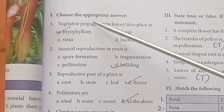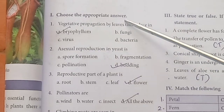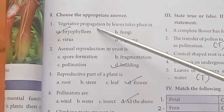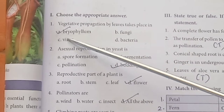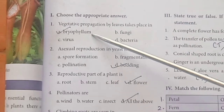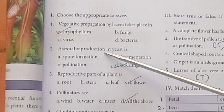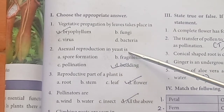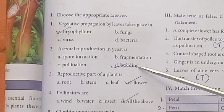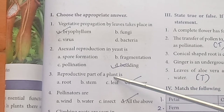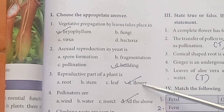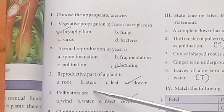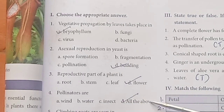Exercise — Choose the appropriate answer. Vegetative propagation by leaves takes place in Bryophyllum. Asexual reproduction in yeast is budding. The reproductive part of the plant is the flower. Pollinators include water, insects, and all of the above.